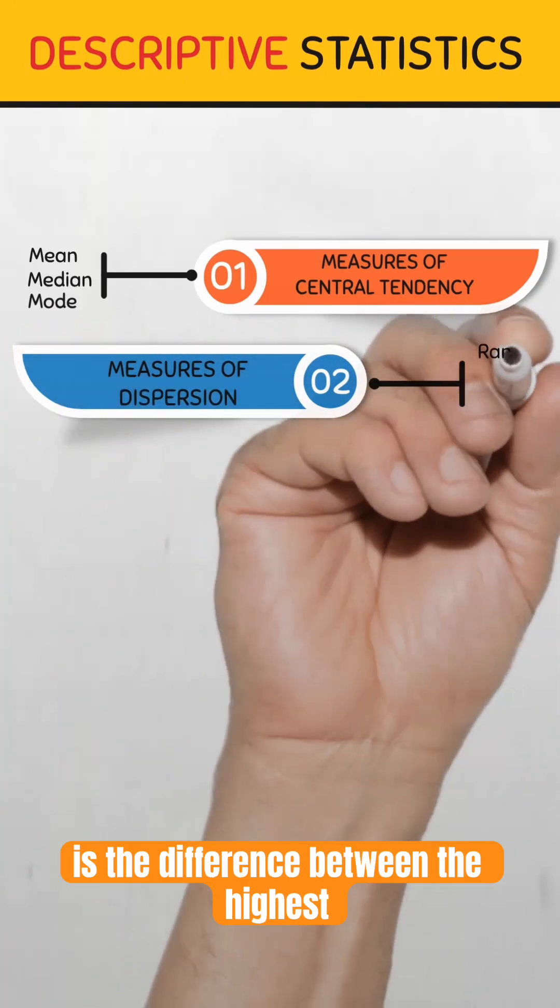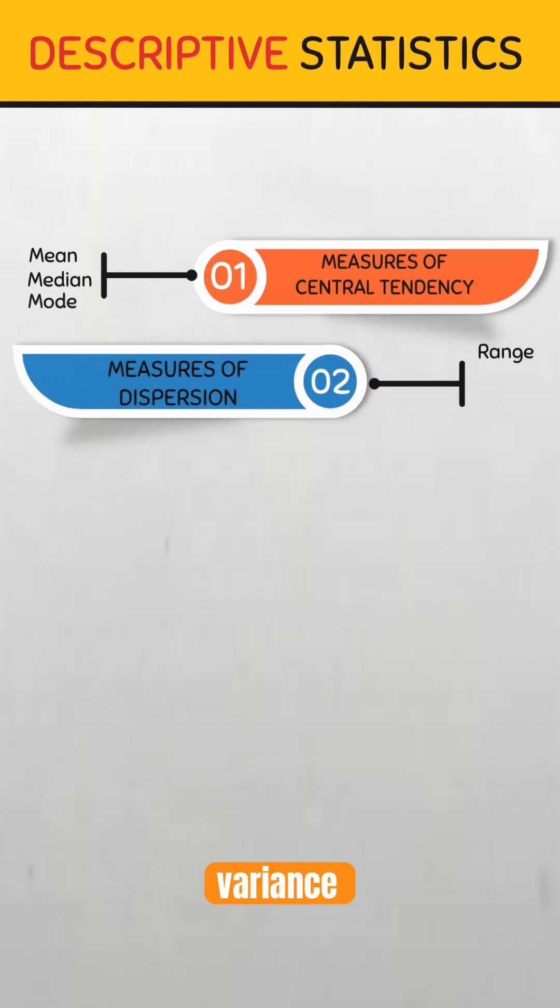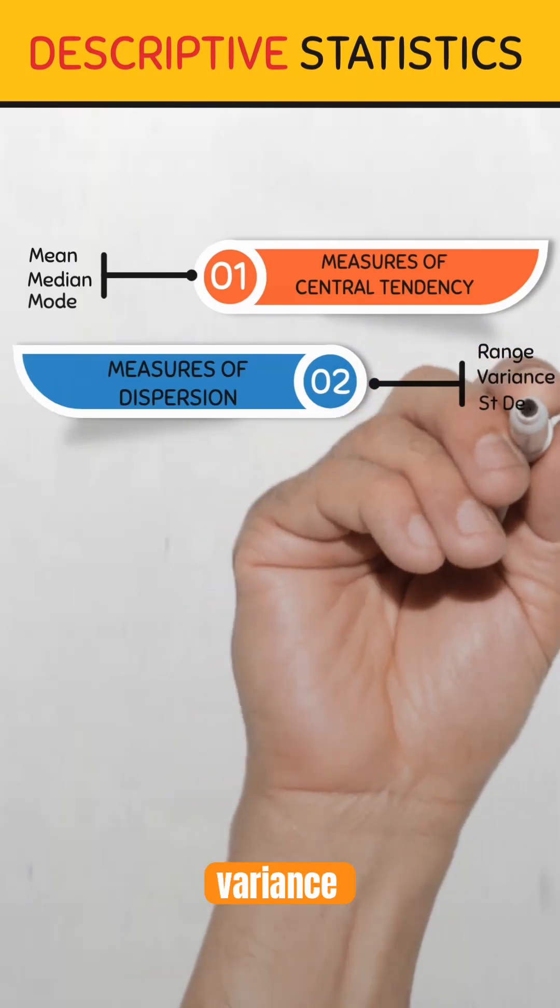Range is the difference between the highest and the lowest values. Variance shows how much values deviate from the mean, and standard deviation is the square root of the variance.